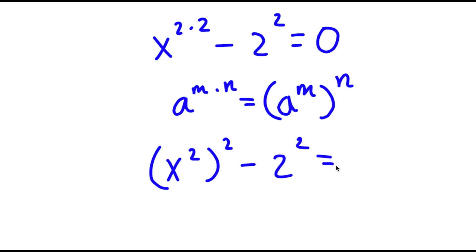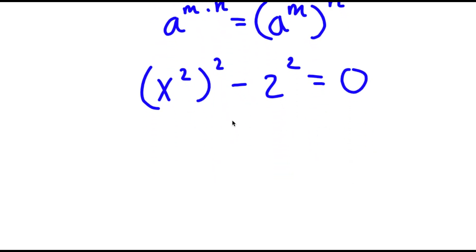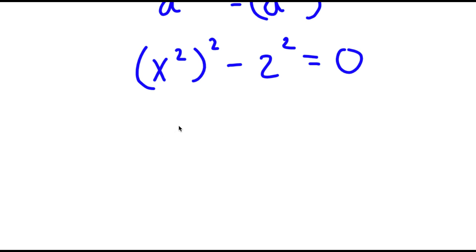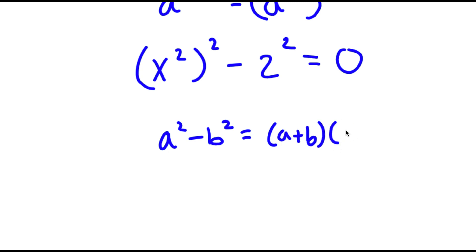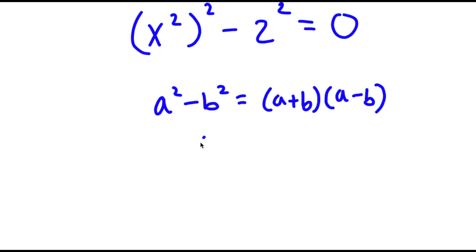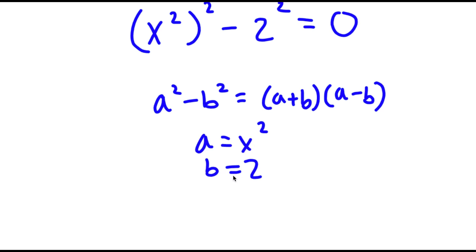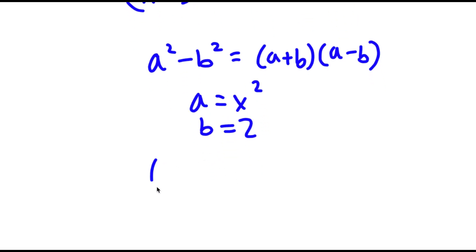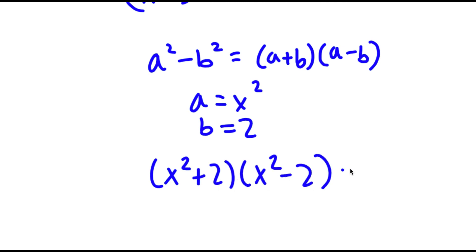Now I have this minus 2 squared is equal to 0. If I have something in the form a squared minus b squared, this is equal to a plus b times a minus b. In this case, a is x squared and b is 2. So I have x squared plus 2 times x squared minus 2 is equal to 0.